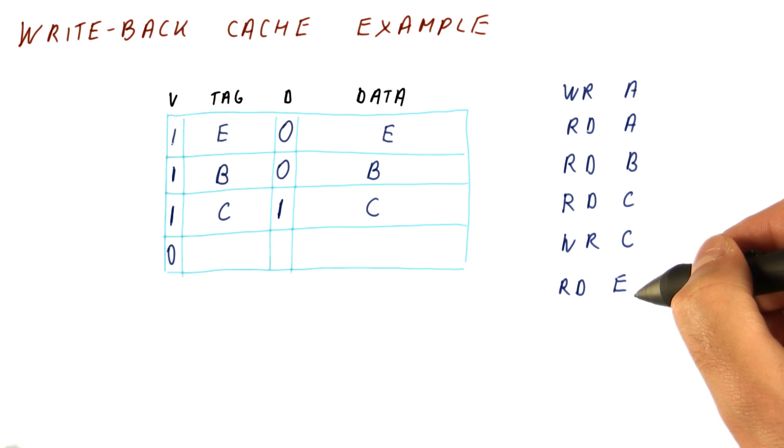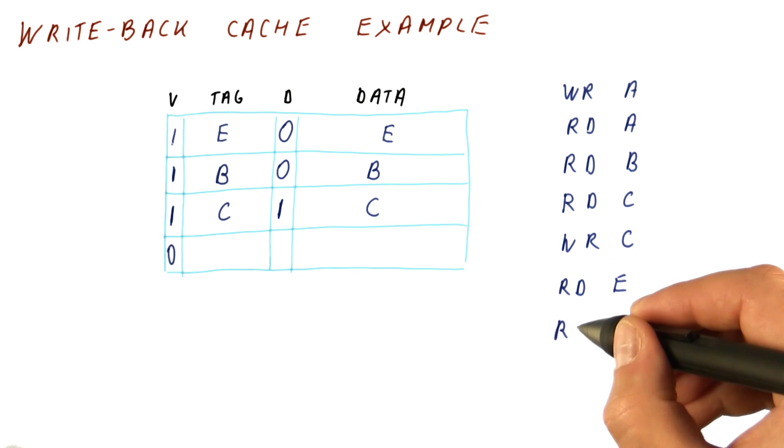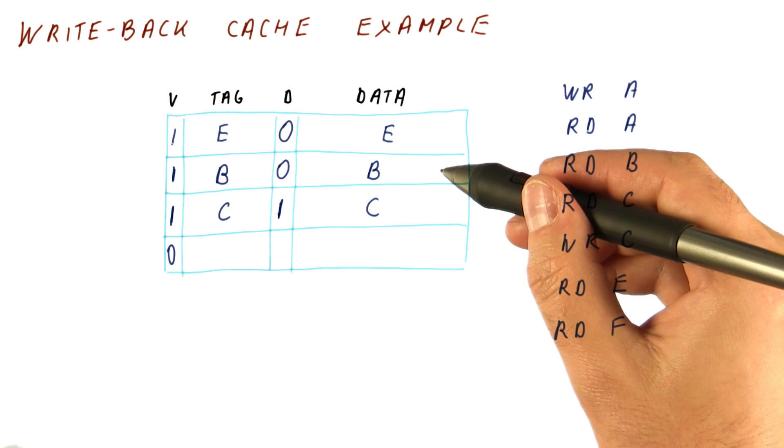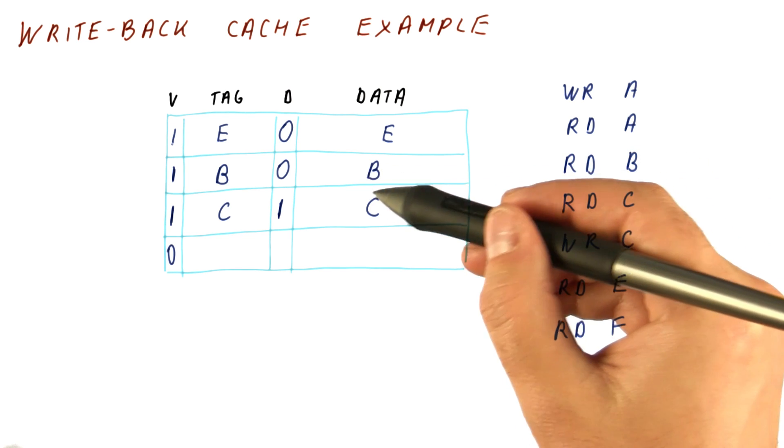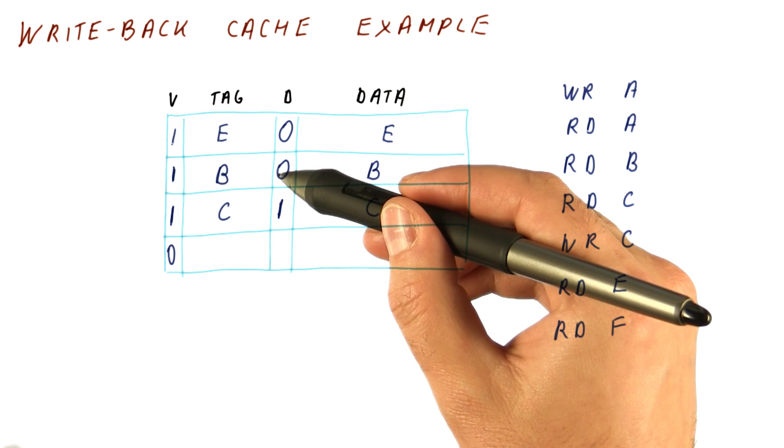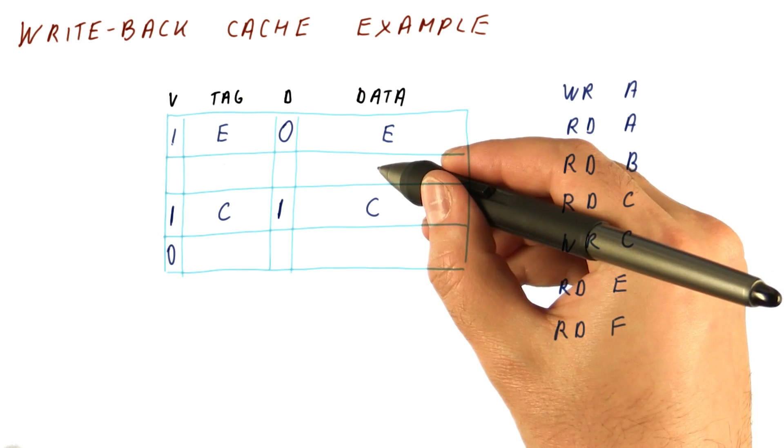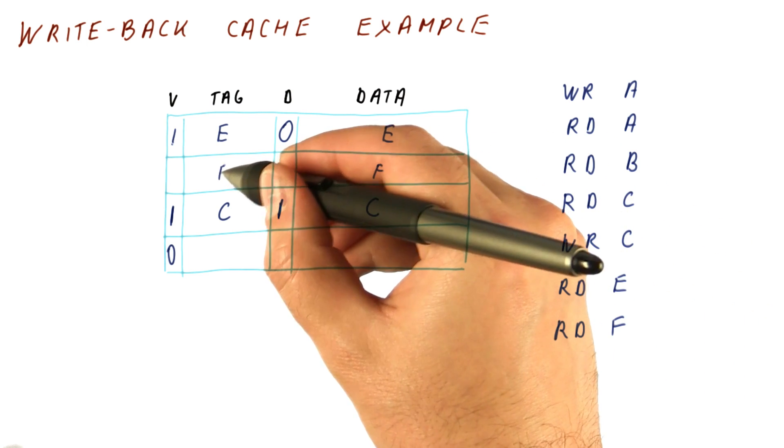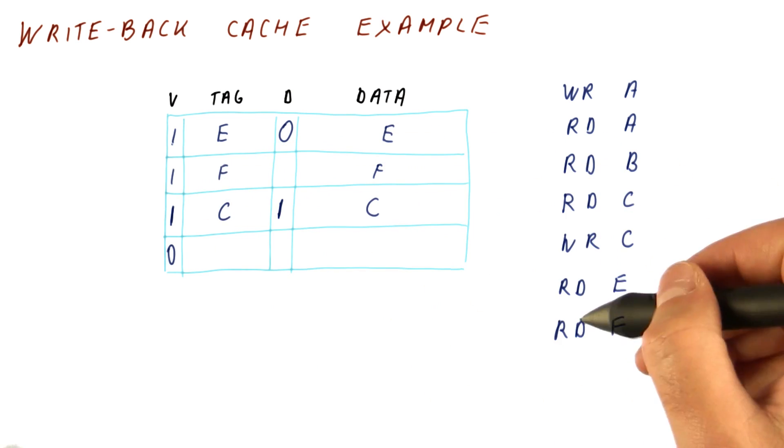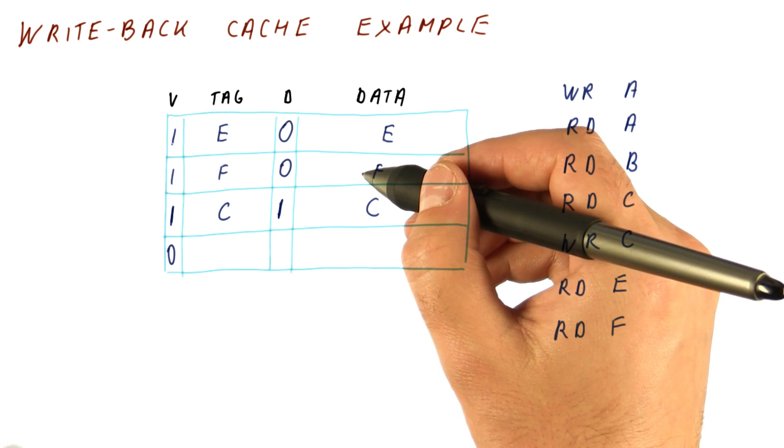And this continues on. Let's say that now we have a read to F, which replaces B. When we want to replace B, we check the dirty bit. It's 0, so B doesn't get sent to memory. It simply gets overwritten with the data from F we fetch. And because this is a read, we get a 0 here and so on.